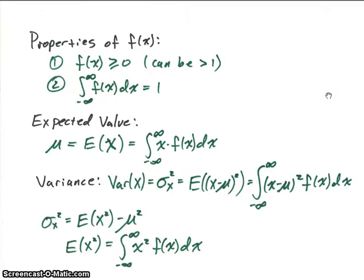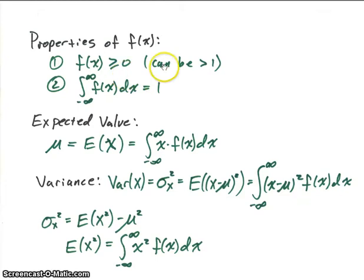What are the properties of the density function for a continuous random variable? Many things are very similar to what we covered with the discrete random variable. The density function can be greater than or equal to zero. In fact, it can actually be greater than one, because we're not dealing with probabilities of specific values as with discrete random variables — the integral of the function is a probability. So the function value itself can exceed one, but the integral of the whole function cannot be bigger than one.